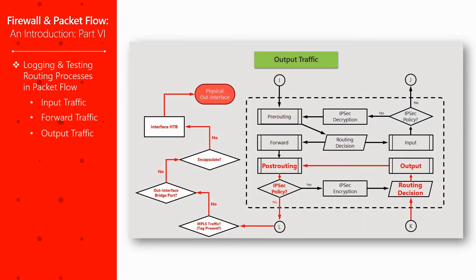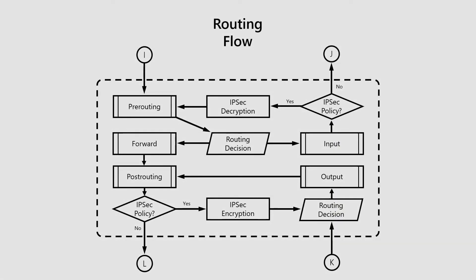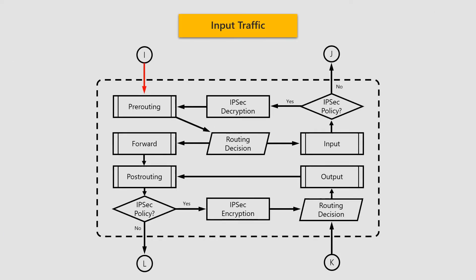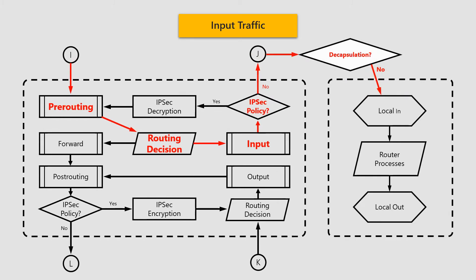In previous sessions, we mentioned that there are five main processes inside the routing flow and each of them consists of a number of smaller steps, as can be seen here. Let's start with input traffic. This is the path of the input traffic when it enters the routing flow via point I, hitting the two processes of pre-routing and input process before exiting the routing flow via point J and toward the local processes of the router.